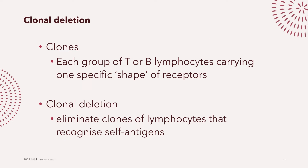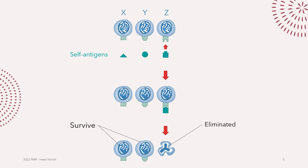The solution to that problem is the concept of clonal deletion. In immunology, a clone is a group of T or B cells that has one specific shape of receptors. Clonal deletion is the elimination of those clones that can recognize self-antigens. Our pluripotent cells can generate thousands upon thousands of types of clones.